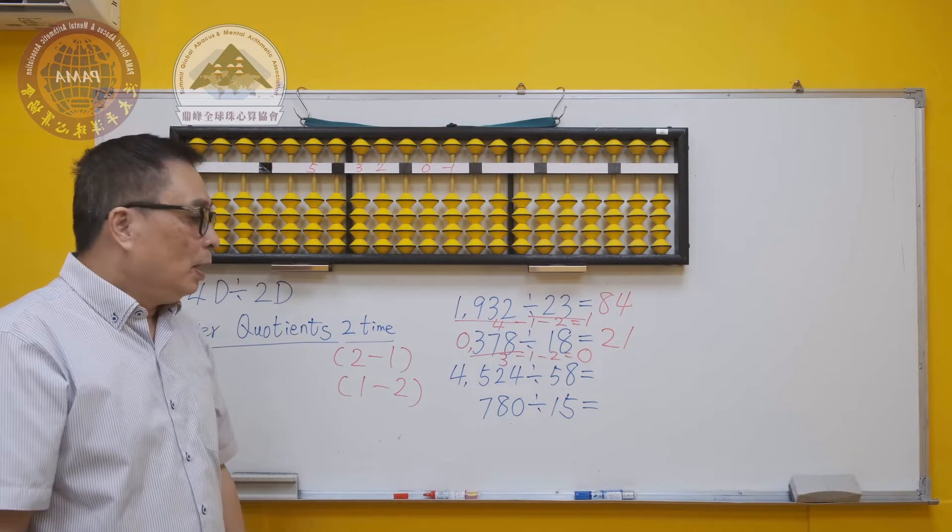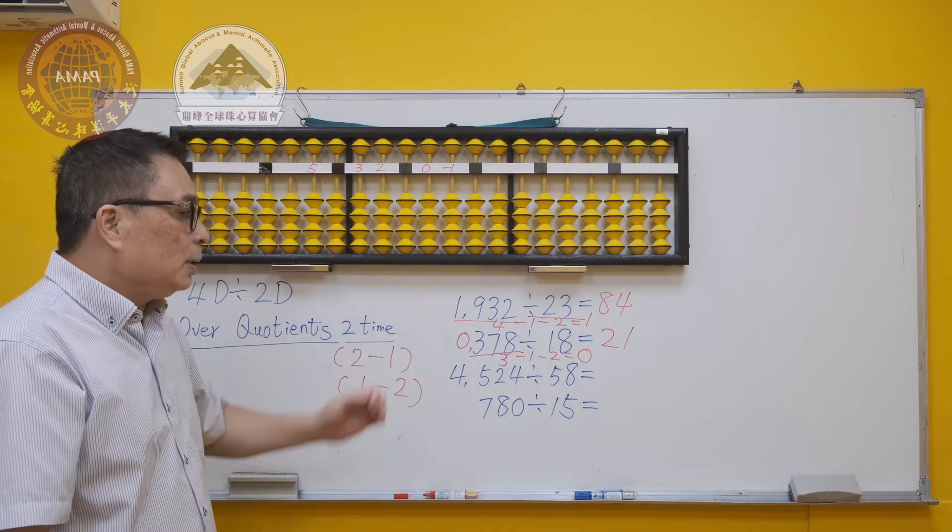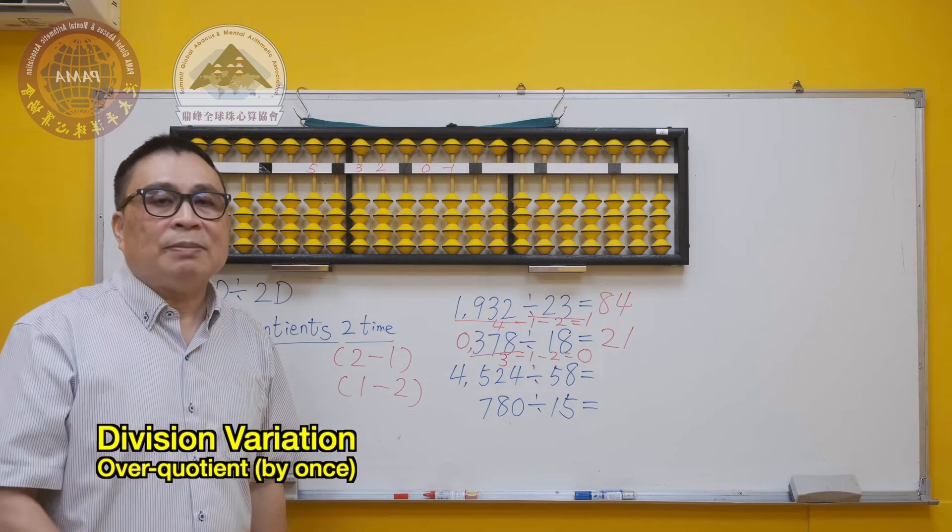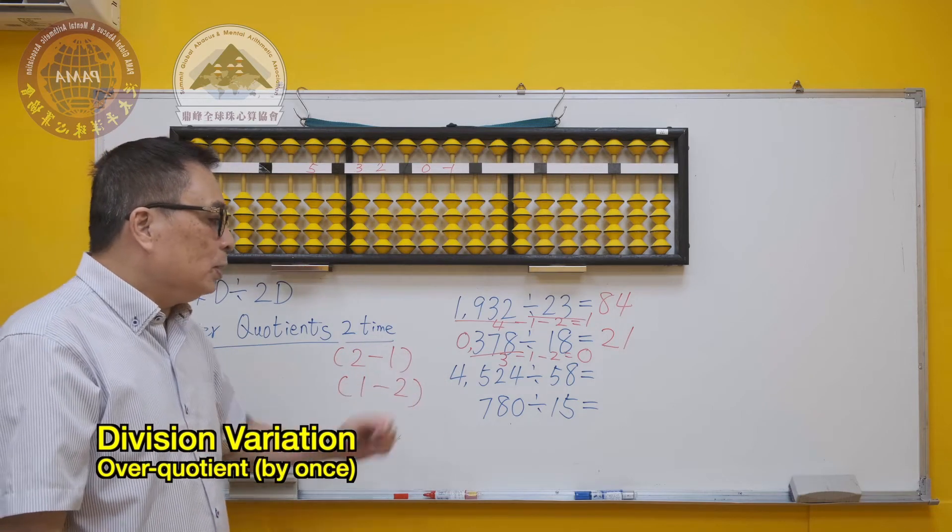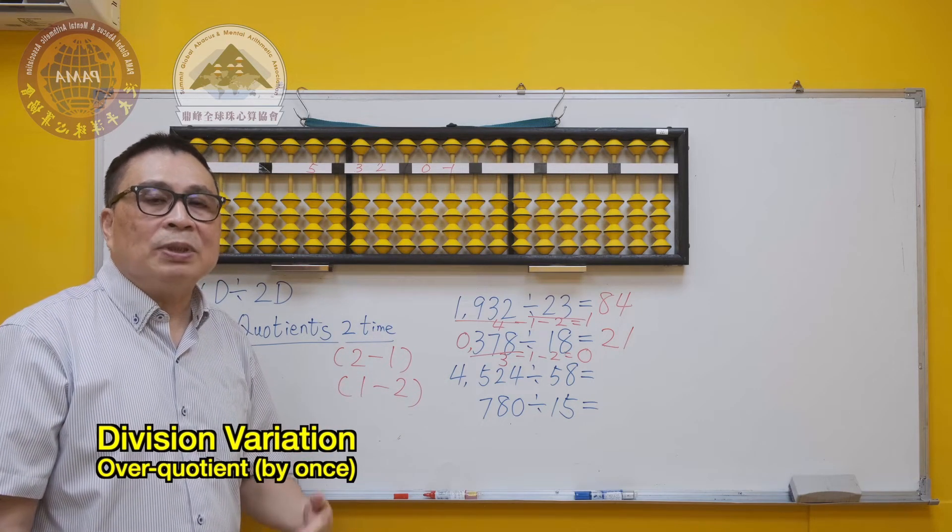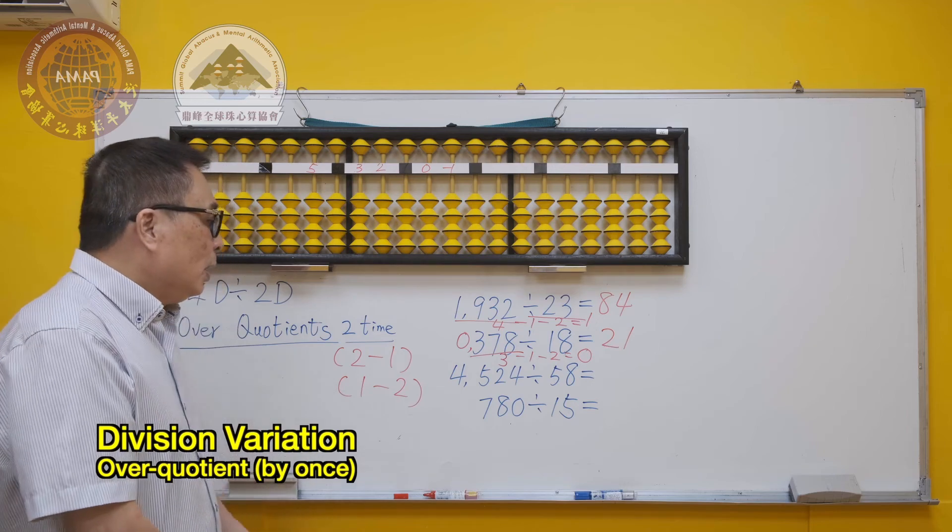The previous demonstration shows the division of over quotient by 1. But in some situations, we might have over quotient by 2 times or more than 2 times. For example, in question 3.